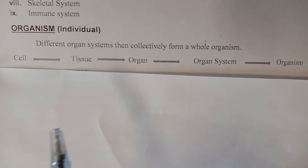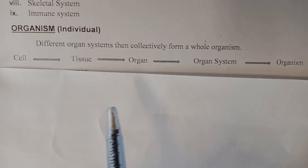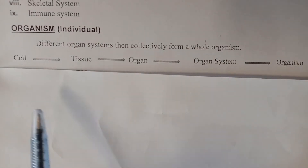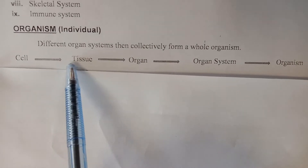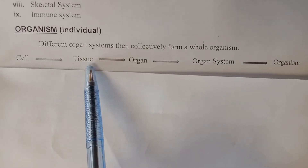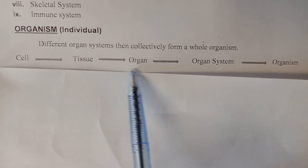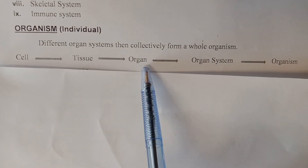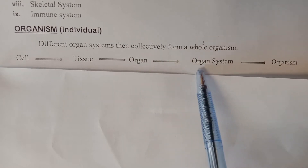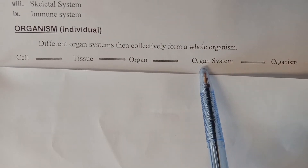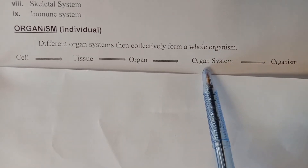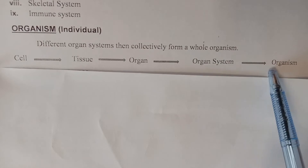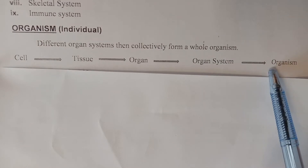Now I will explain the hierarchy of how living organisms are made. Cells combine together to form tissue. Tissues combine to form organs. Organs combine together to form organ systems. Many organ systems combine together to form the whole body of an organism.